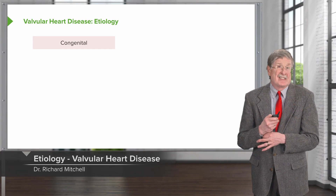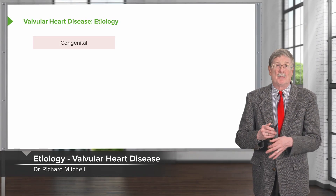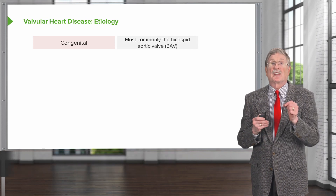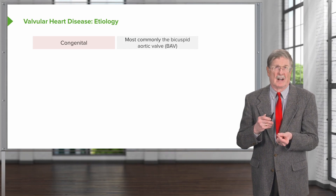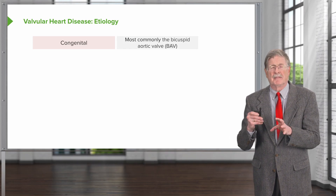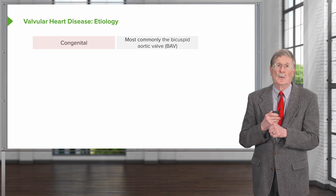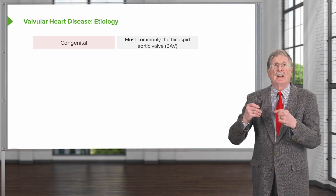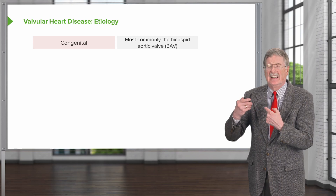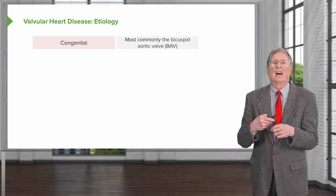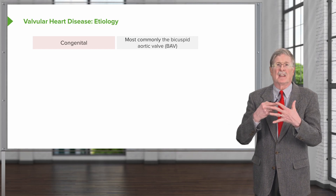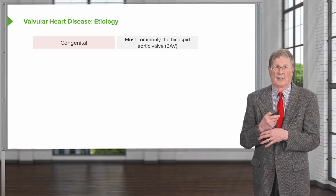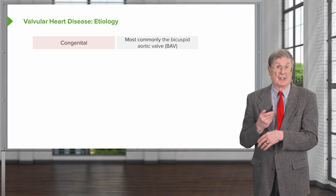Valvular heart disease — the causes of this can be congenital. Congenital heart disease most commonly is going to be bicuspid aortic valve. Roughly one percent of the population will have a bicuspid aortic valve, which leads to increased incidence and propensity to develop calcific aortic degeneration with stenosis. That's the most common congenital lesion.